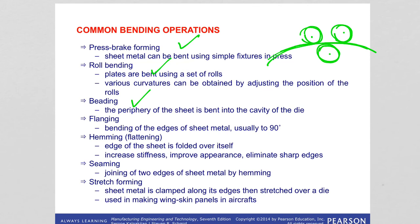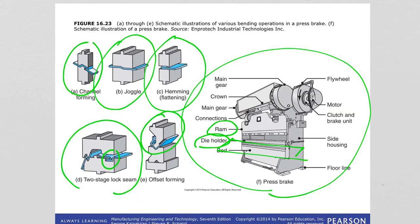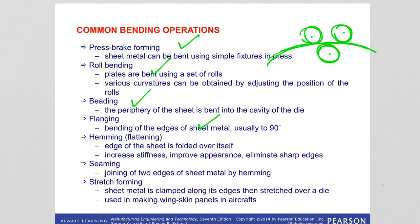Flanging is bending of the edges of the sheet metal, usually to 90 degrees. Hemming or flattening is where the edge of the sheet is folded over itself. This increases the stiffness of the edges and eliminates sharp edges.